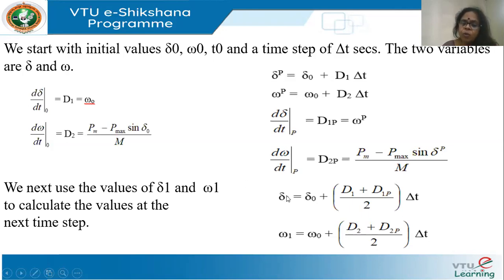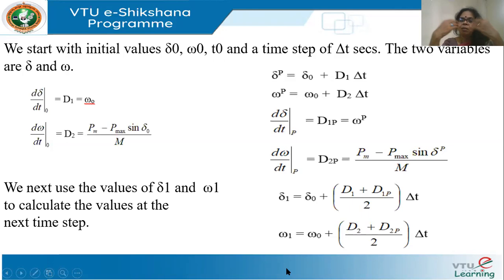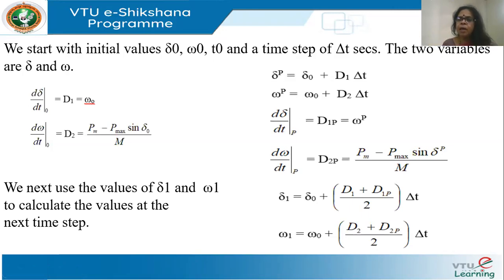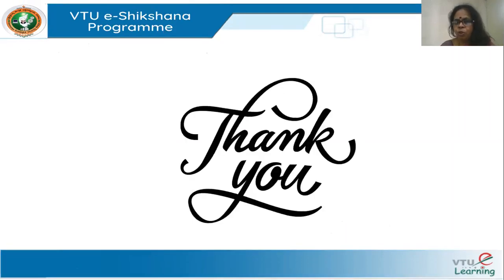So δ₁ and ω₁ are the values of delta and omega at time t + Δt. Next, we use these values to calculate δ₂ and ω₂. In a program, we equate δ₁ and ω₁ to δ₀ and ω₀ and go back to repeat the computation again and again. When a fault occurs, we simply use the correct value of Pmax. This is modified Euler's — very simple to compute. In the next lecture, an example for the computation will be shown. Thank you.